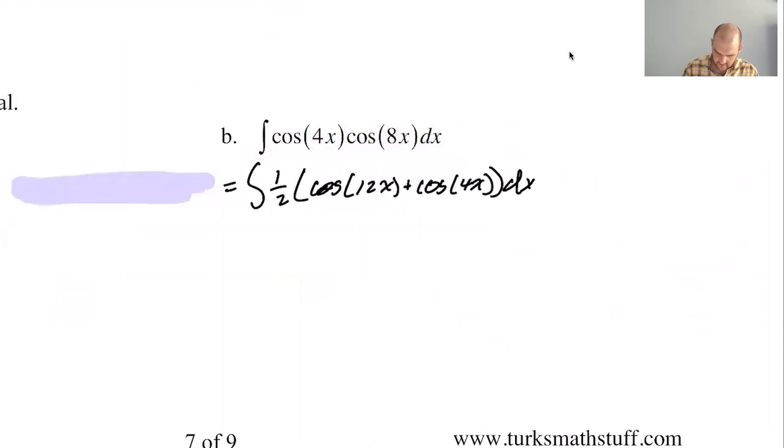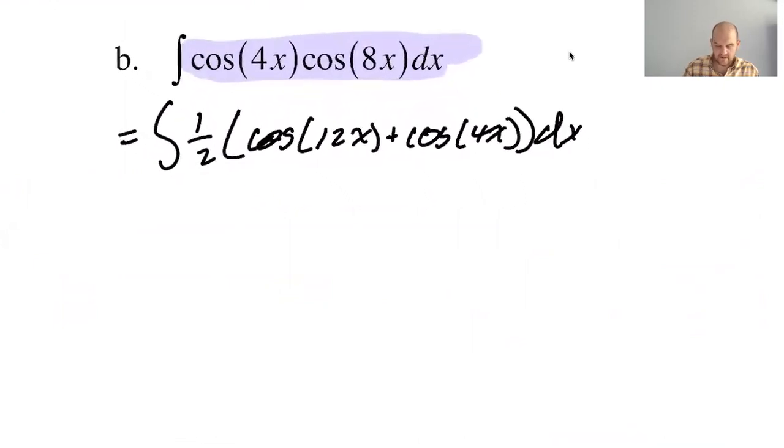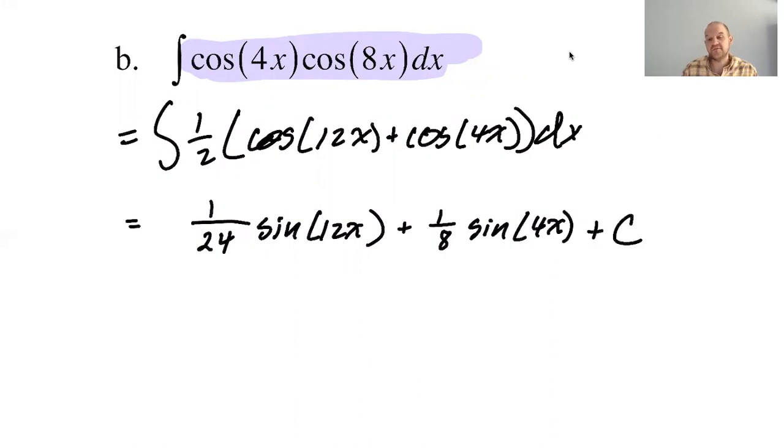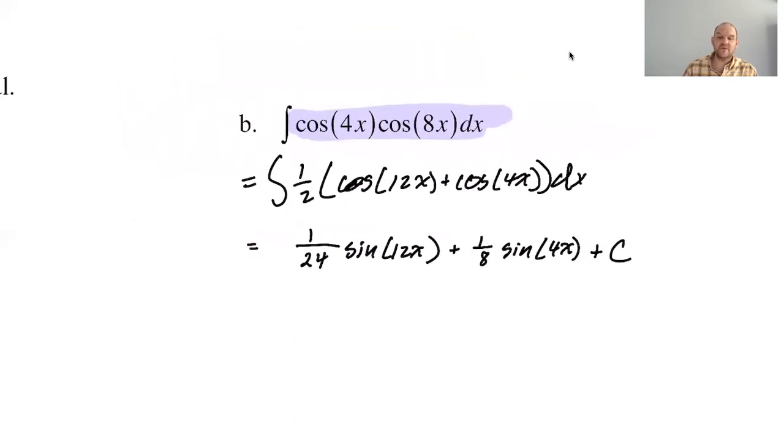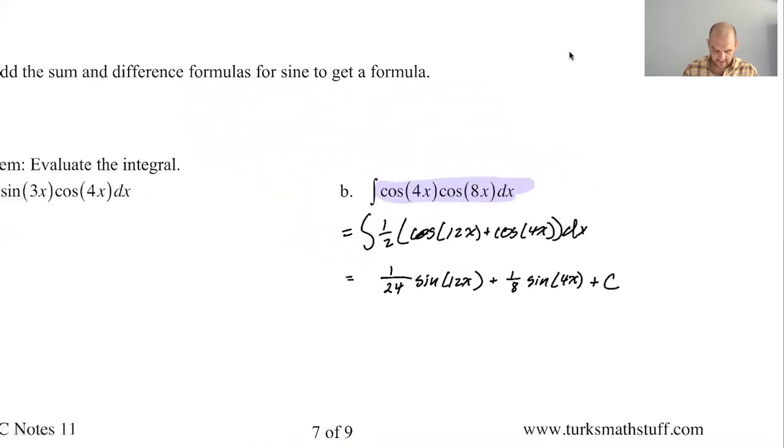So integral, 1 half and then 1 twelfth is 1 twenty-fourth sine of 12x plus 1 eighth sine of 4x plus c. So if you know the formulas, these aren't bad problems. If you don't know the formulas, you're going to stumble around for quite some time.